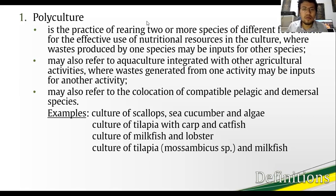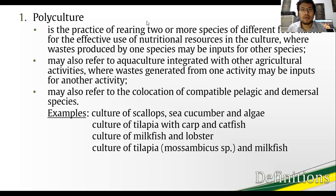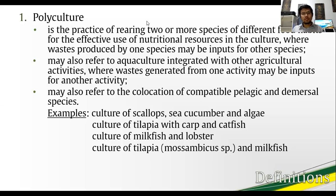Polyculture is also the co-location of a pelagic and a demersal species. Pelagic species occupy the upper layers of the aquatic environment, while demersal species, like the janitor fish, occupy the bottom. Examples include the culture of scallops, sea cucumber, and algae; the culture of tilapia, grass carp, and catfish; the culture of milkfish and lobster; and the culture of milkfish and the Mozambicus species of tilapia.